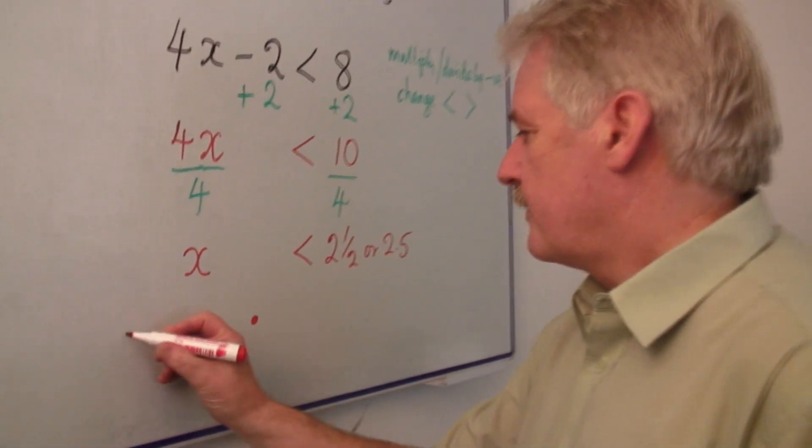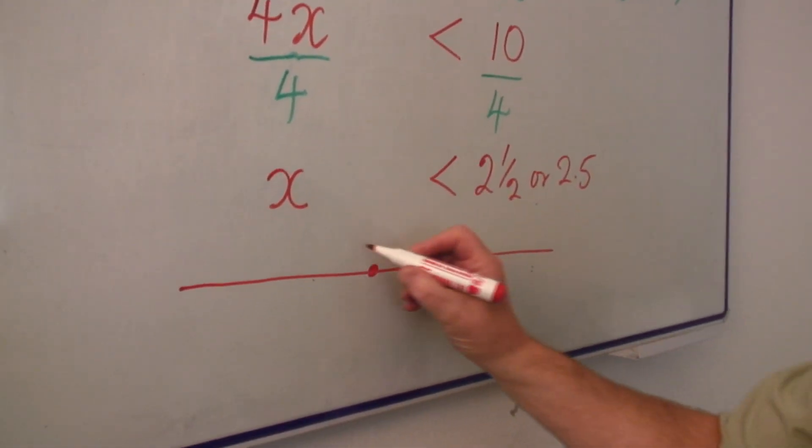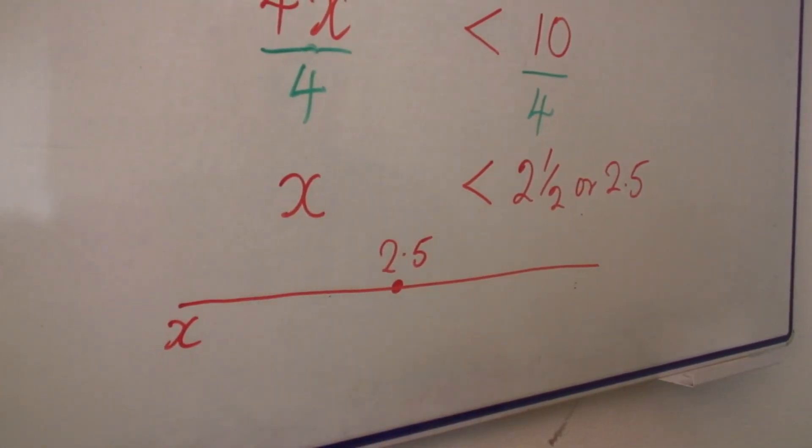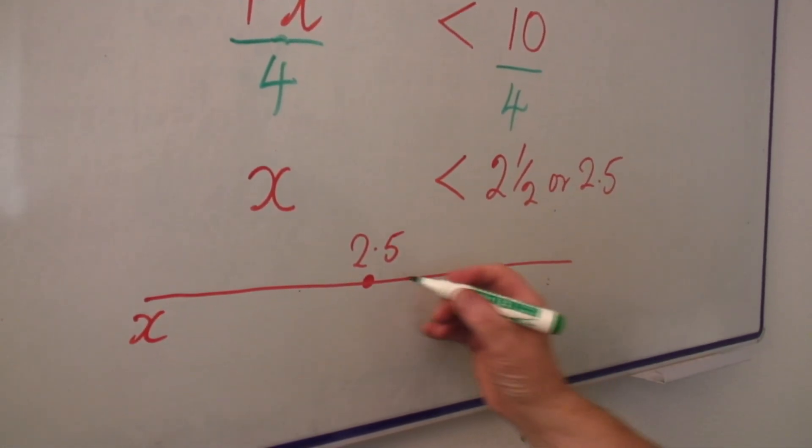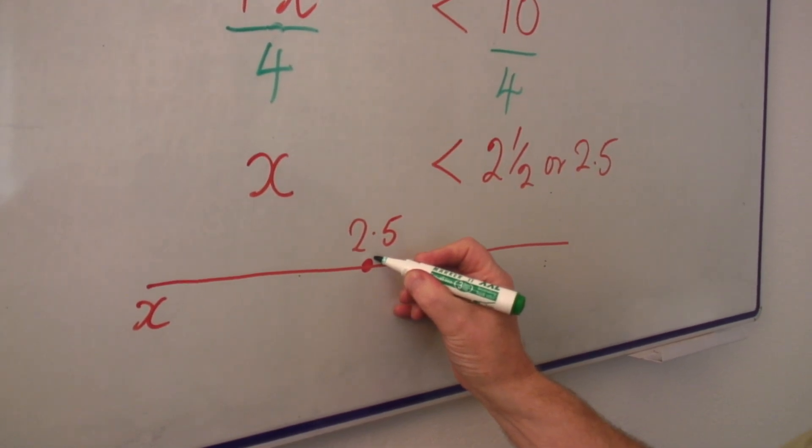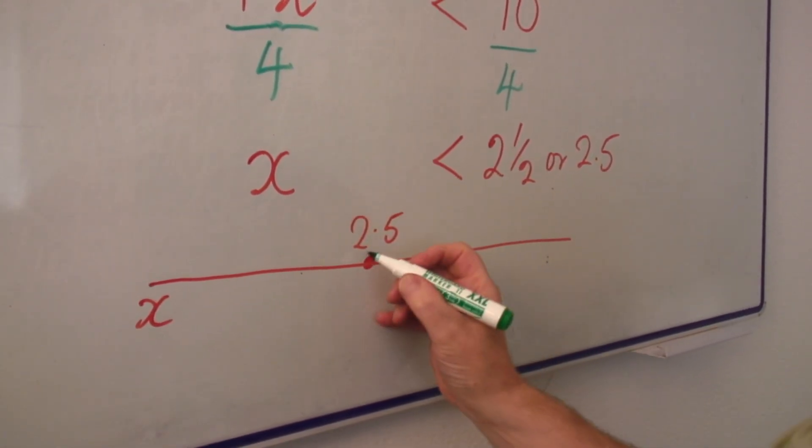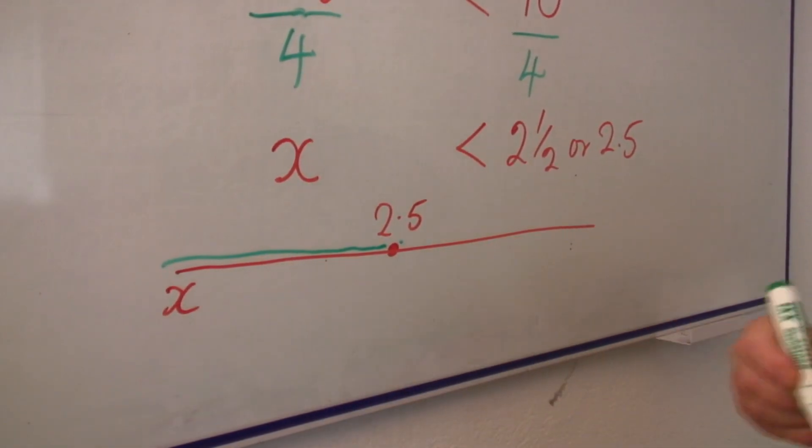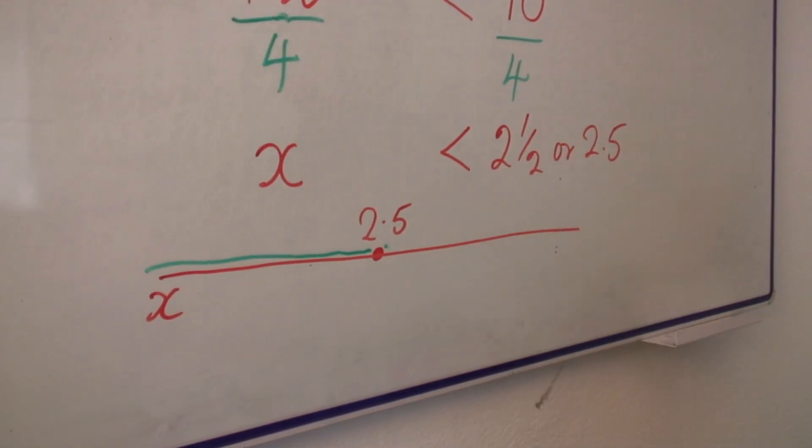So here is x and there is 2.5. So in fact, our number is everything—x is everything less than 2.5 but not equal to 2.5.